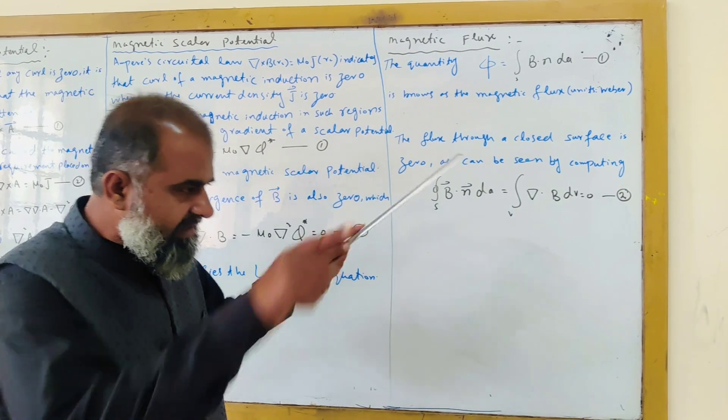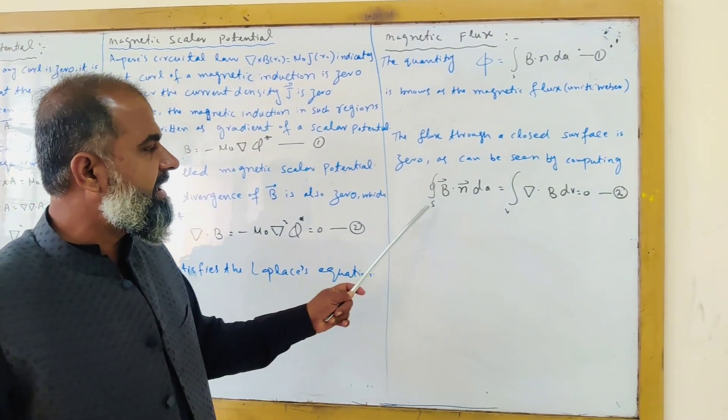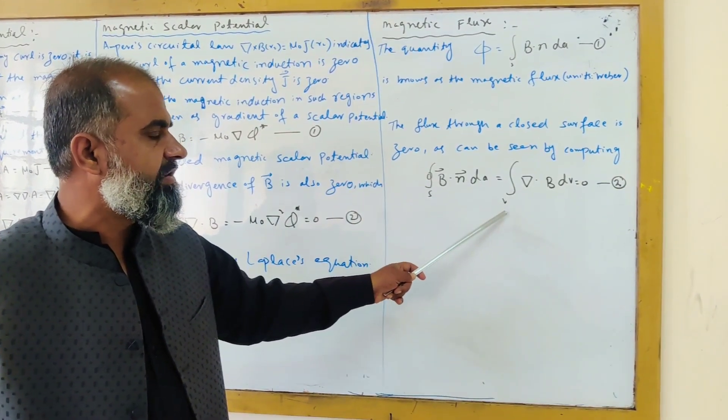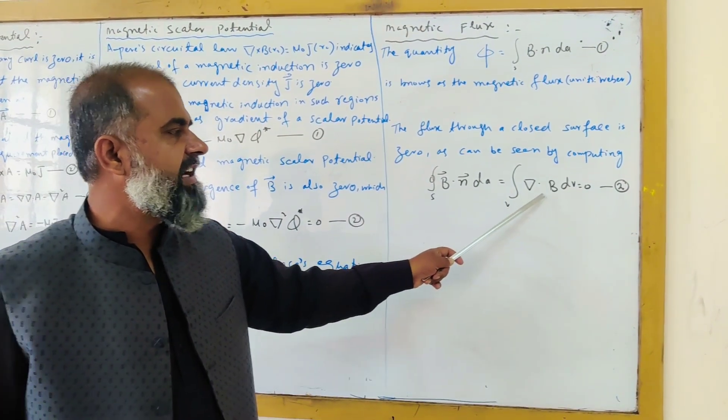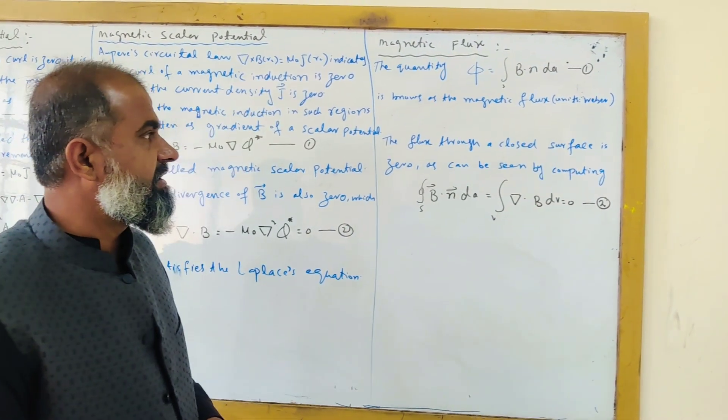If you take the flux into a closed surface, you can write surface integral B dot n dA equals volume integral del dot B dV equals zero. This is equation 2.